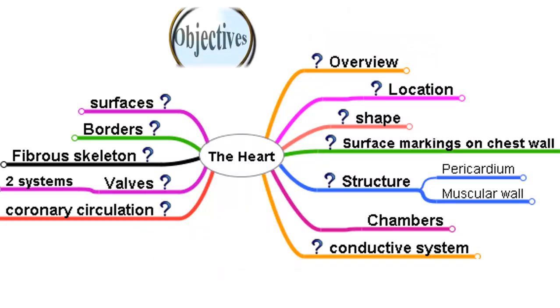This is a presentation about the anatomy of the heart. Our objectives include an overview of the heart, its location, shape, and surface markings on the chest wall, such as identifying the position of the heart from the surface anatomy of the chest wall.